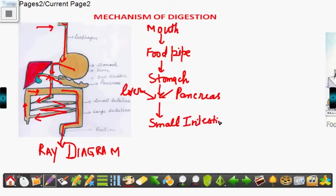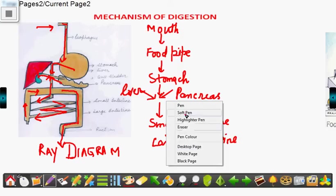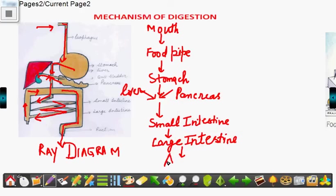From the small intestine, absorption takes place. It goes to the large intestine where absorption of water takes place, and the waste is eliminated out of the body through the anus.